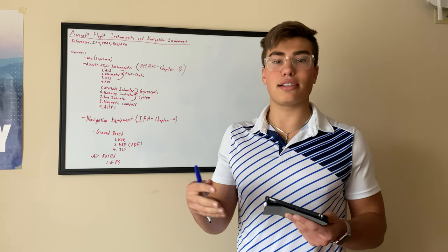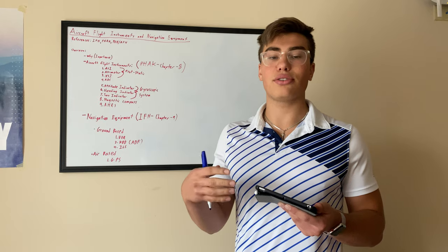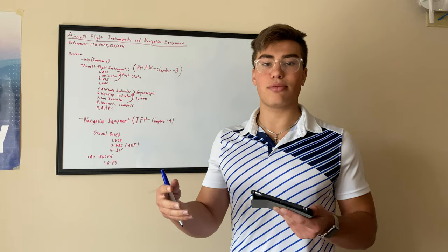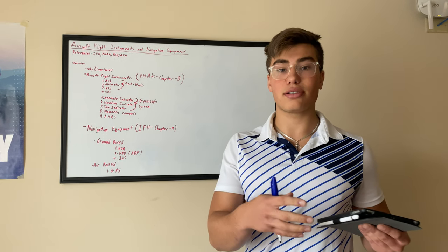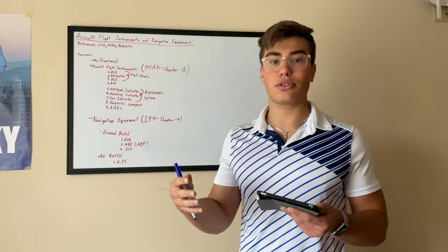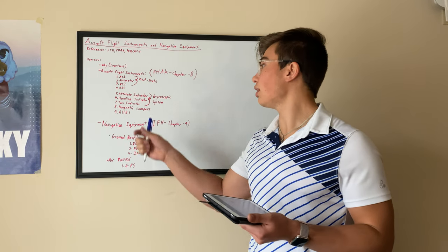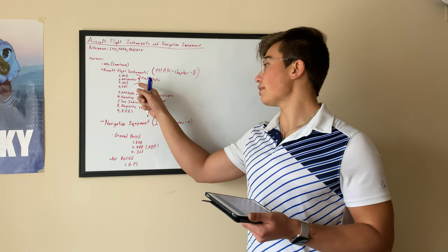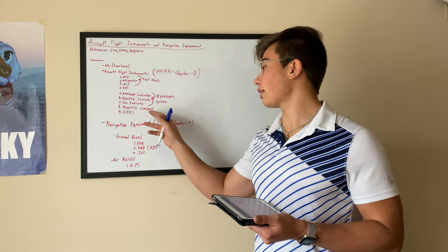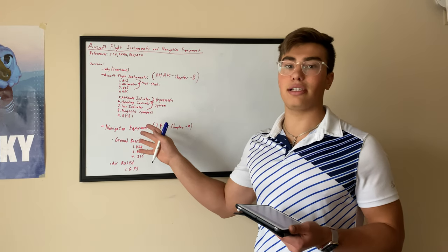It's important to know how instruments work because as aviators and pilots when you're flying an aircraft you need to understand what the instruments are saying — what your airspeed is — but you also need to know how that instrument works, because when you get erroneous errors you need to troubleshoot so you can terminate a flight in the safest manner possible. We'll be going over the pitot-static system, the ASI, altimeter, VSI, then the gyroscopic systems, the magnetic compass, AHRS, and then ground-based and air-based navigation equipment.